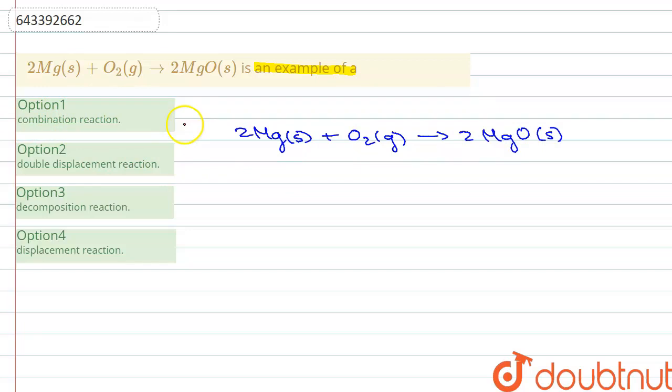Option one says combination reaction. So in combination reaction what happens is two or more reactants combine to form a single product. For example, we have A and B. These two will combine to form AB. Now as you can see that is what is actually happening in this reaction. This is A and B and they are combining to form a single product. So this is an example of combination reaction but let's see the other options as well.